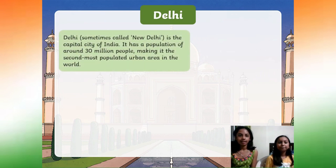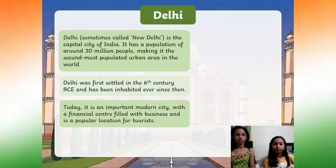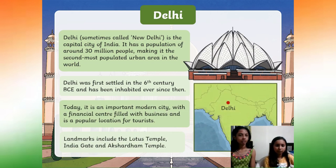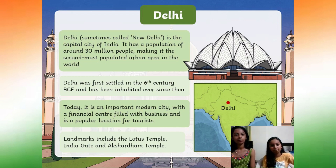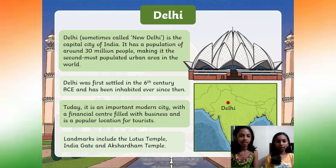Delhi, sometimes called New Delhi, is the capital city of India. It has a population of around 30 million people, making it the second most populated area in the world. Delhi was first settled in the 6th century BCE and has been inhabited ever since. Today, it is an important modern city with a financial center filled with business and a popular location for tourists. Landmarks include the Lotus Temple, India Gate, and Akshardham Temple. This is the Lotus Temple.